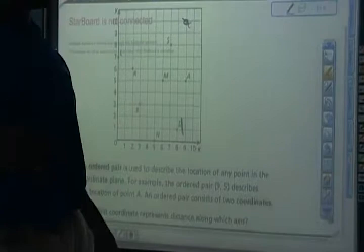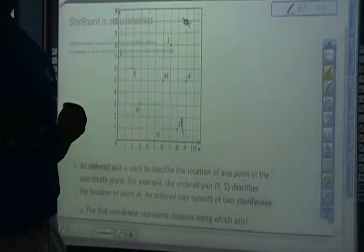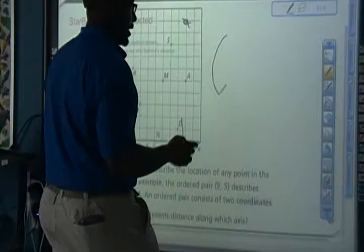Alright, so today what we talked about in Unit 7 Lesson 5 was coordinate planes. We talked about those ordered pairs and how to find those different ones.